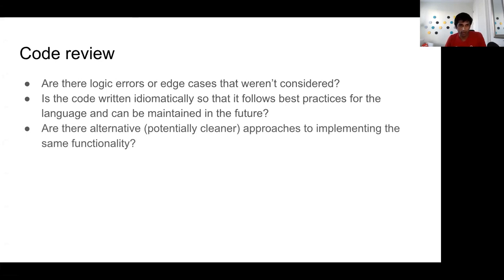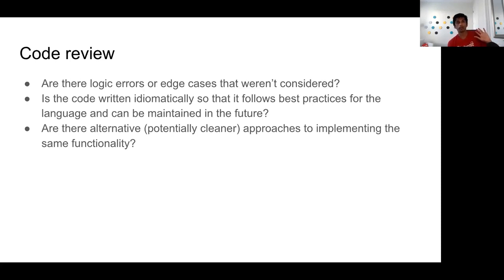There's another aspect: are there other approaches to implementing the same functionality? At Facebook we call a code change a 'diff.' You might write 500 lines to achieve some outcome, but a reviewer might say: 'You're making this too complicated — if you leverage this library another team created, all of this code would be unnecessary.' That's almost always better — you don't want to reinvent the wheel.